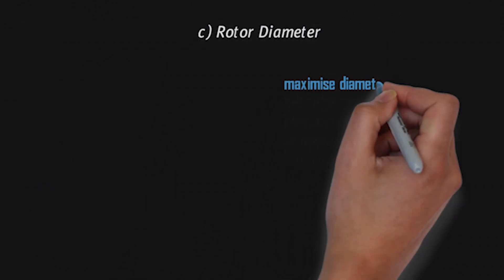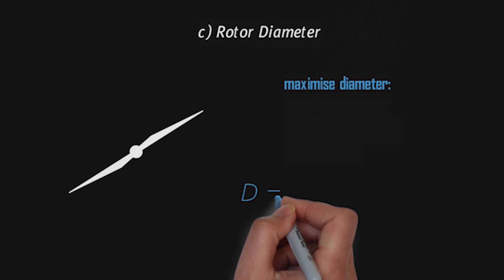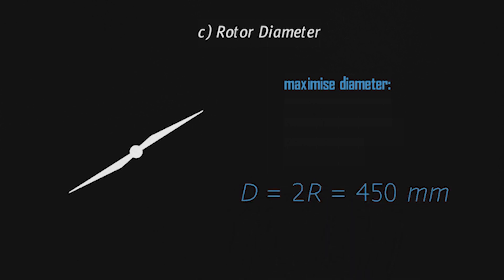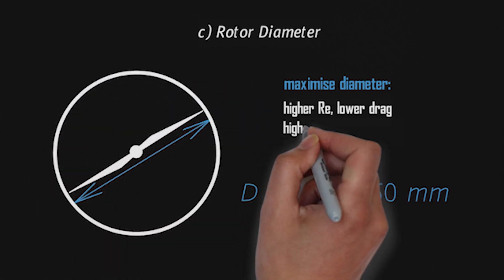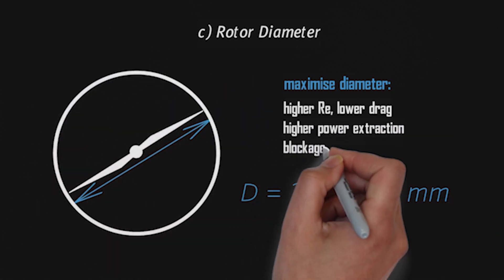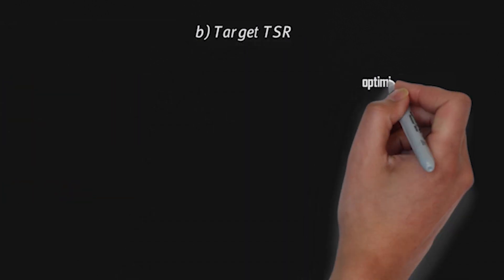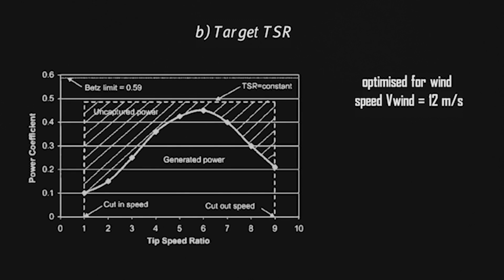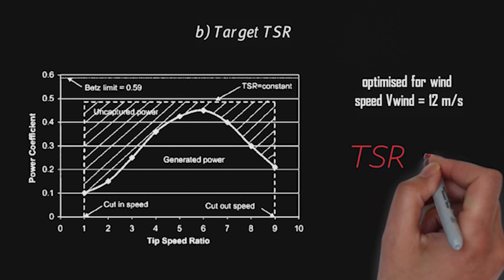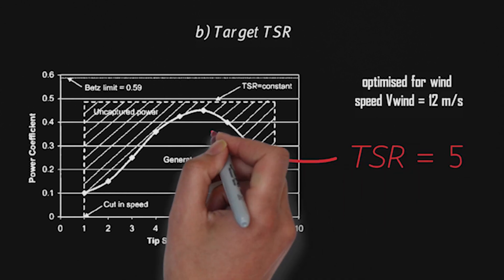We chose to maximize the diameter of the turbine to the limit of 450 millimeters to obtain higher Reynolds numbers and therefore reduce drag. Maximizing the area covered by the turbine and taking advantage of the wind tunnel walls gives higher power extraction and an increase in CP. The turbine is optimized for a wind speed of 12 meters per second. Previous tests for two-bladed designs showed that the optimal TSR lies around 5 to 6. We decided to aim for a TSR of 5 in order to avoid exceeding the limit of 3000 rpm.